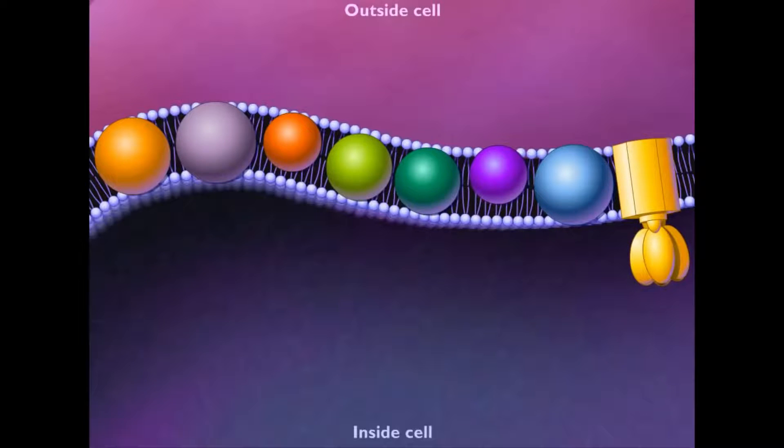During glycolysis and the tricarboxylic acid cycle, oxidation of organic molecules results in production of reduced coenzymes such as NADH.